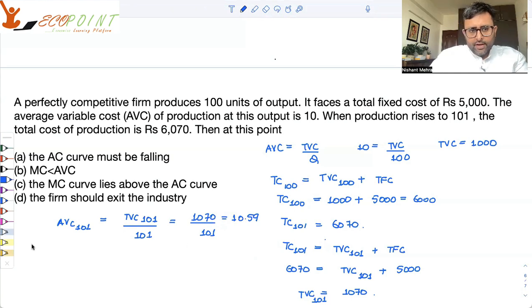And also, can we find out marginal cost? I'll tell you what we are up to. Marginal cost is total cost of 101 units minus total cost of 100 units. So it is 6,070 minus 6,000. 70.